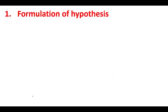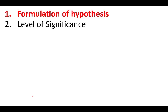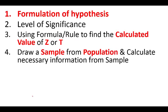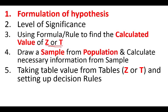There are about six steps in testing of hypothesis. First is the formulation of hypothesis, then defining the level of significance. The next steps involve drawing a sample from the population and extracting necessary information, then using that sample information to calculate the value of Z or T. The fifth step involves using Z and T tables, and the final step involves setting up decision rules and making decisions and interpretations.